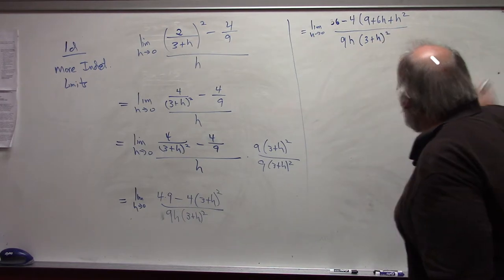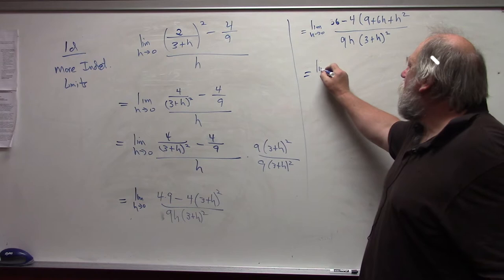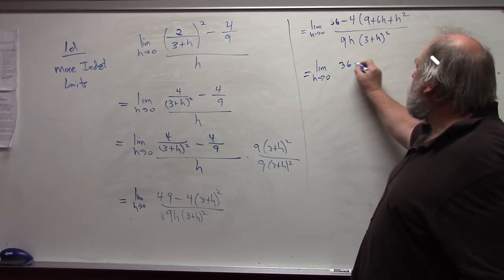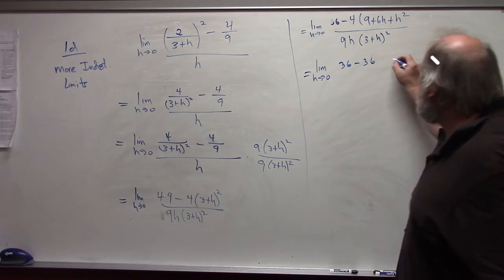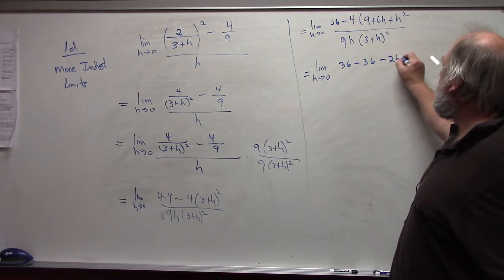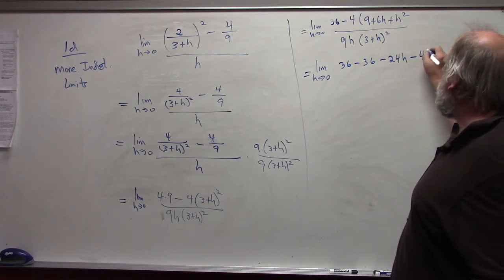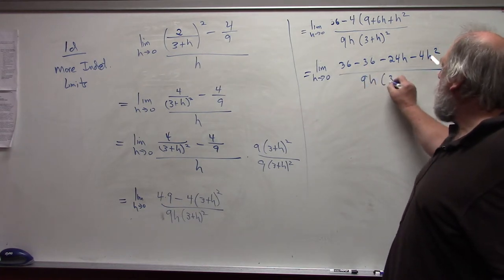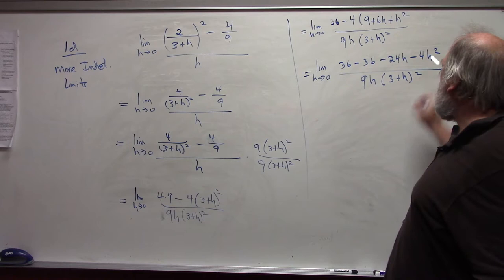I can leave that. This becomes 36 minus 36 minus 24h minus 4h squared over 9h times 3 plus h quantity squared.